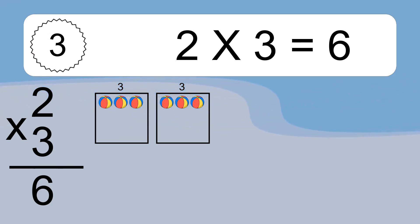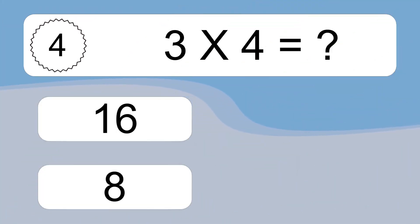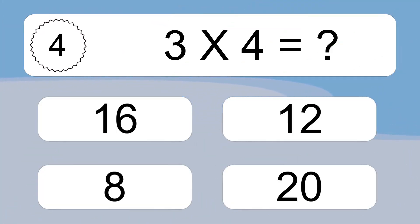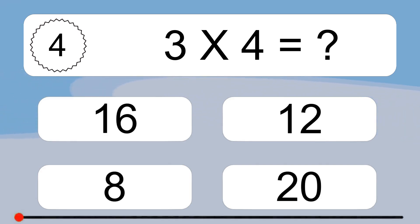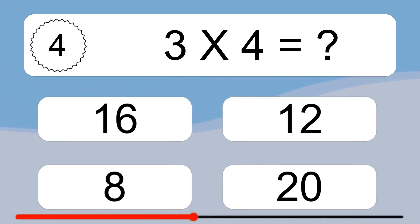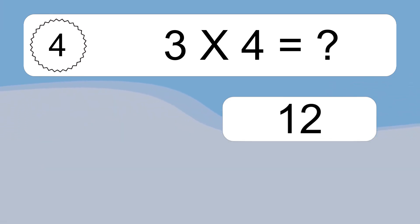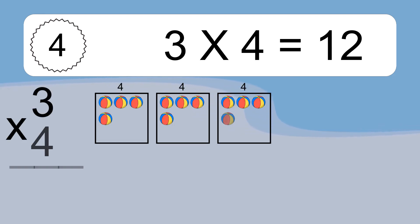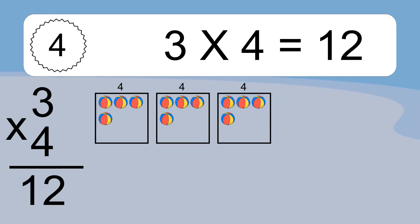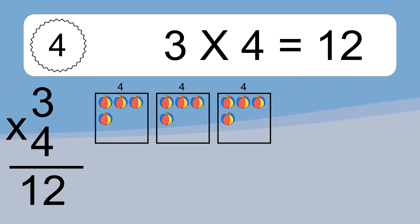3 times 4 equals what? 3 times 4 equals 12. We have 3 boxes, and each box has 4 colorful balls inside. If you count all the balls in all the boxes together, you will have 3 times 4 balls. This equals 12 balls.